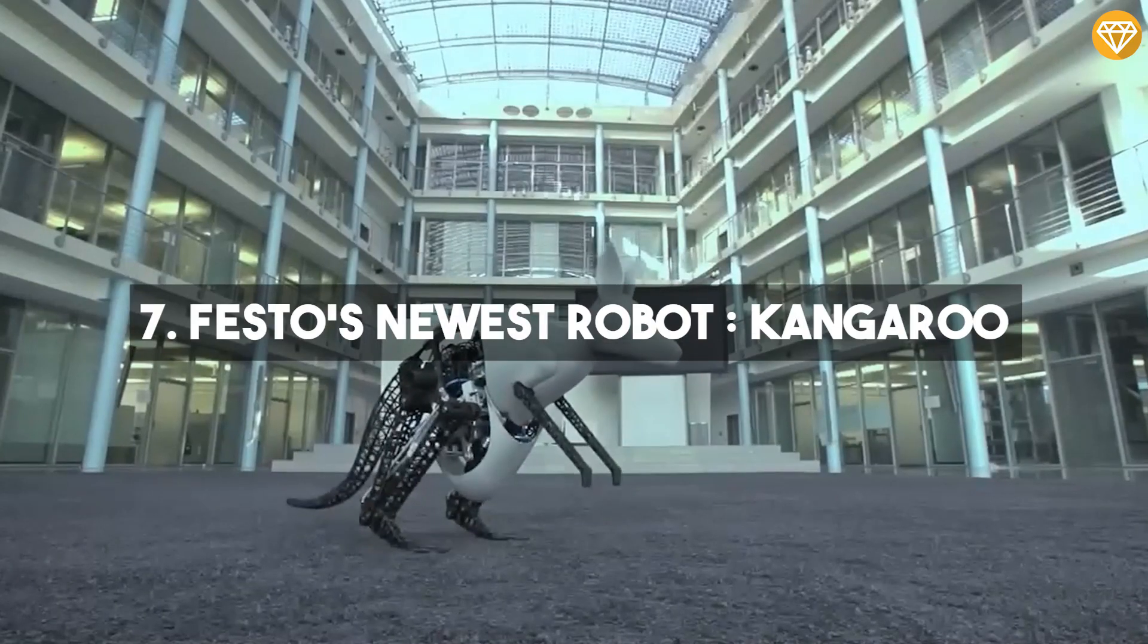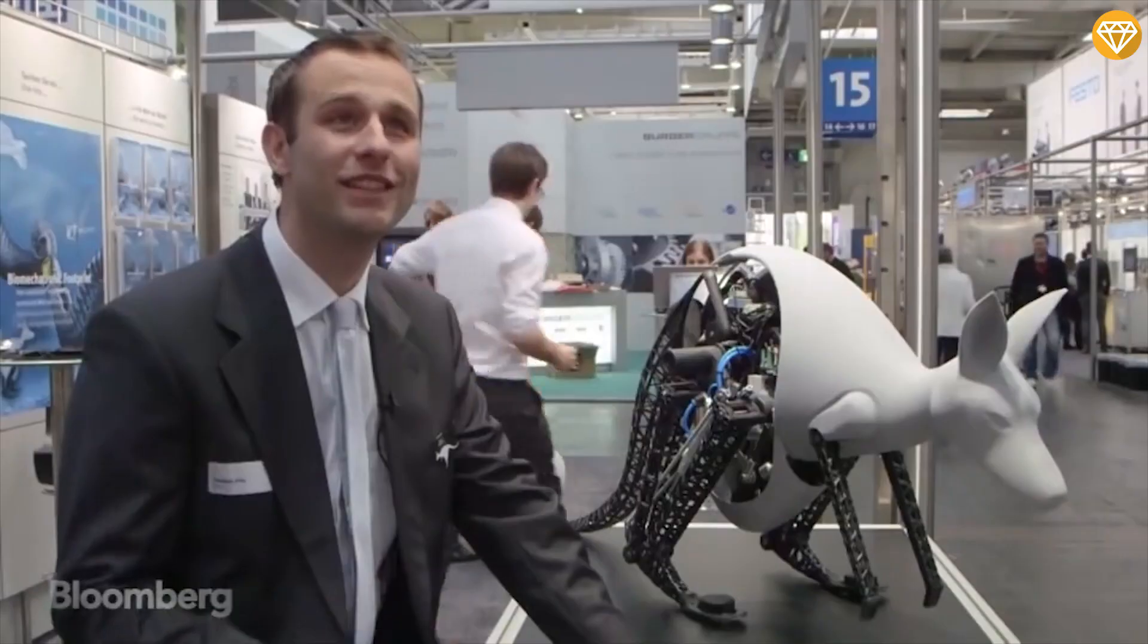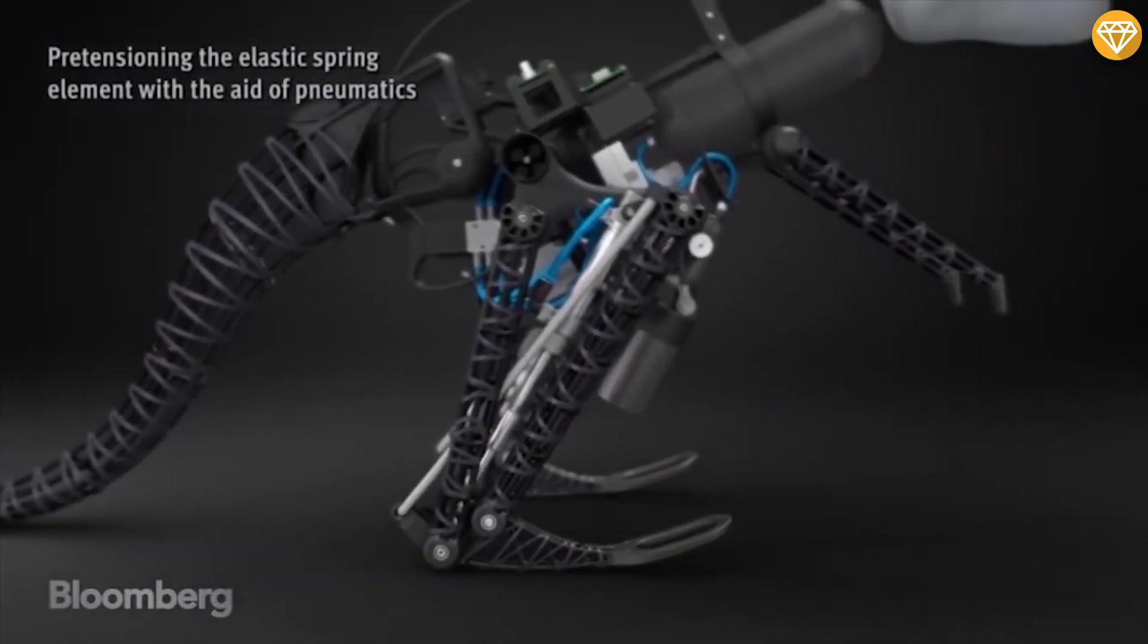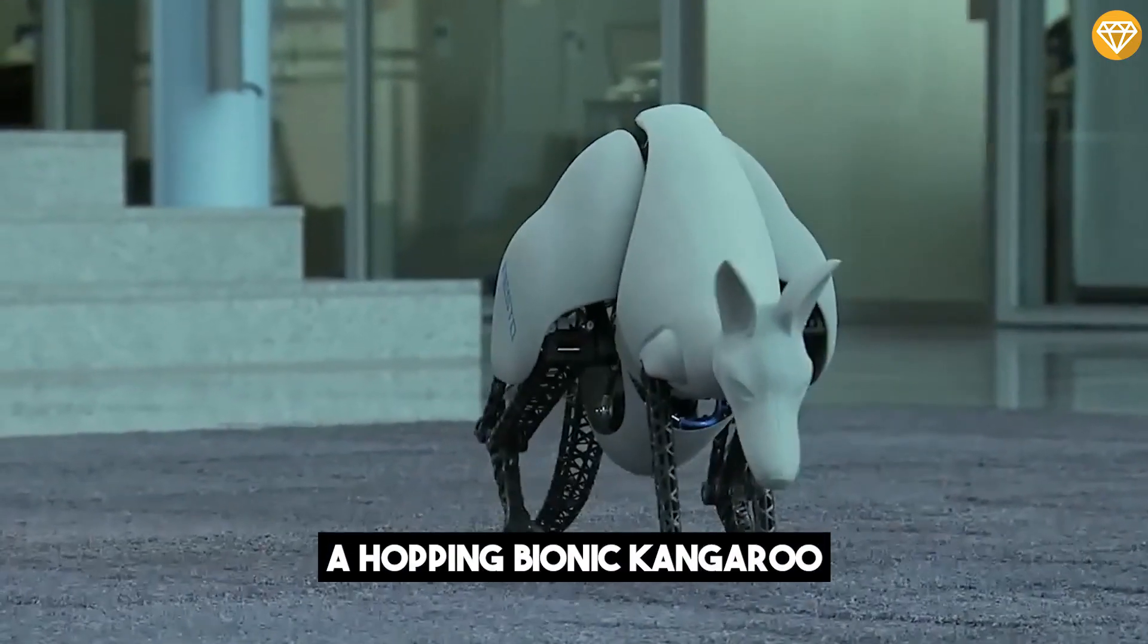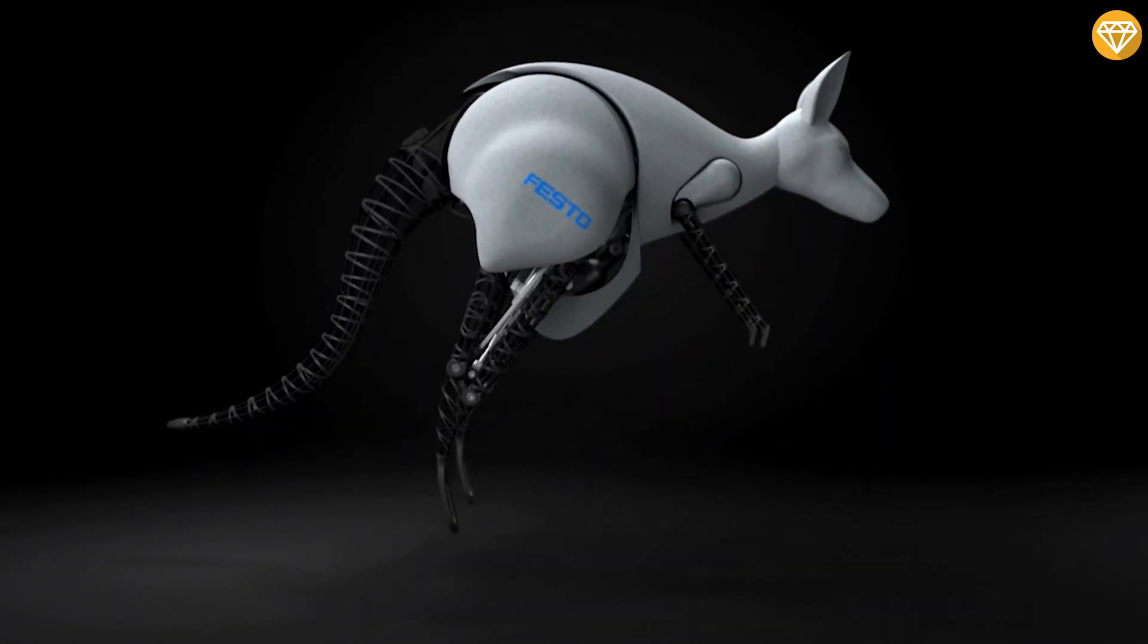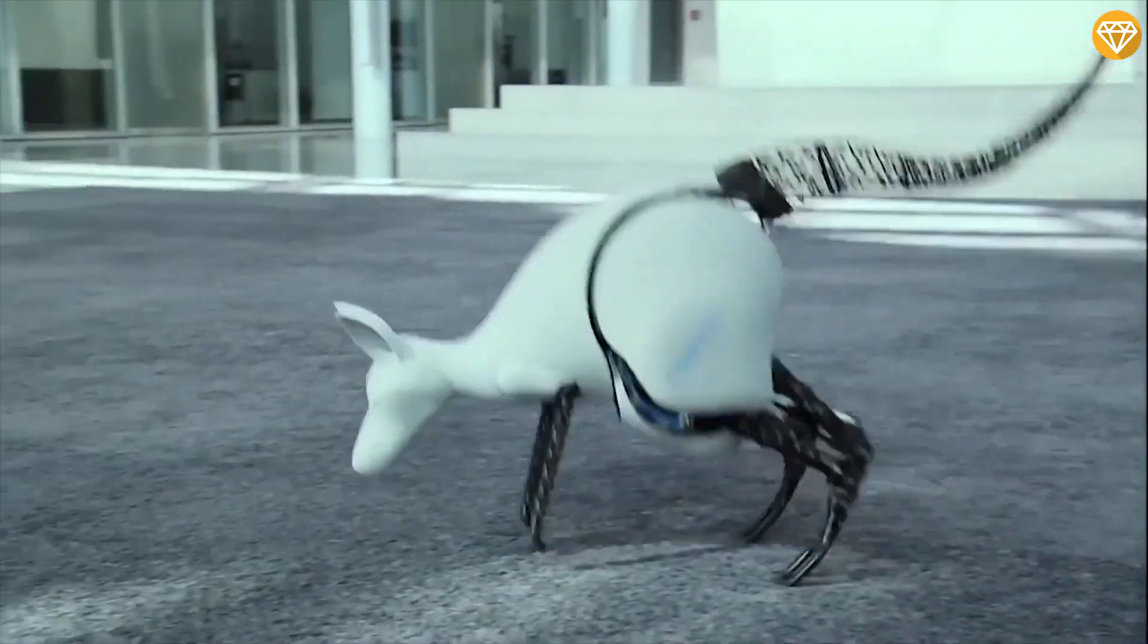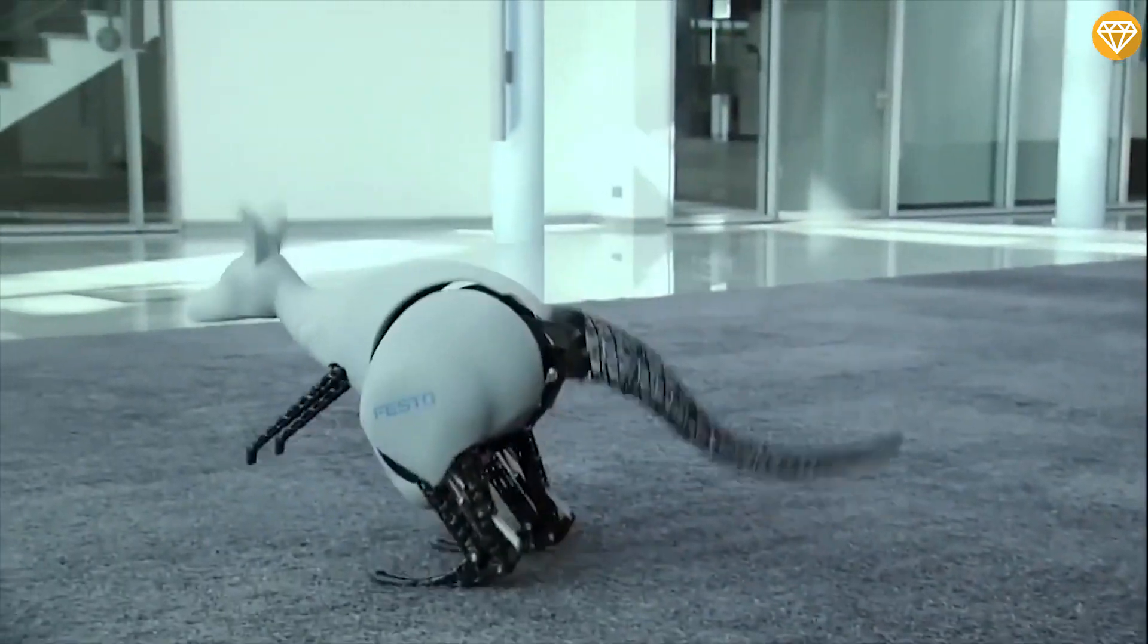Number 7, Festo's Newest Robot Kangaroo. Festo, a German robotics company known for its bio-inspired robots, has unveiled its most ambitious creation yet, a hopping Bionic Kangaroo. The robot accurately emulates the jumping behavior of real kangaroos by efficiently recovering energy from each jump.